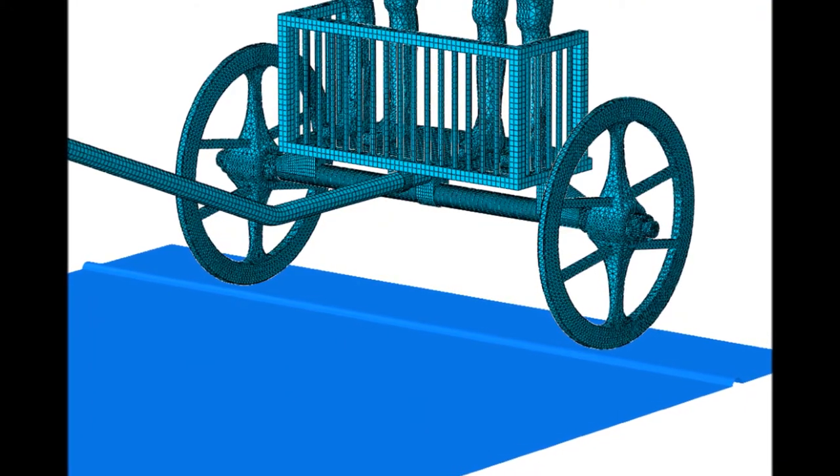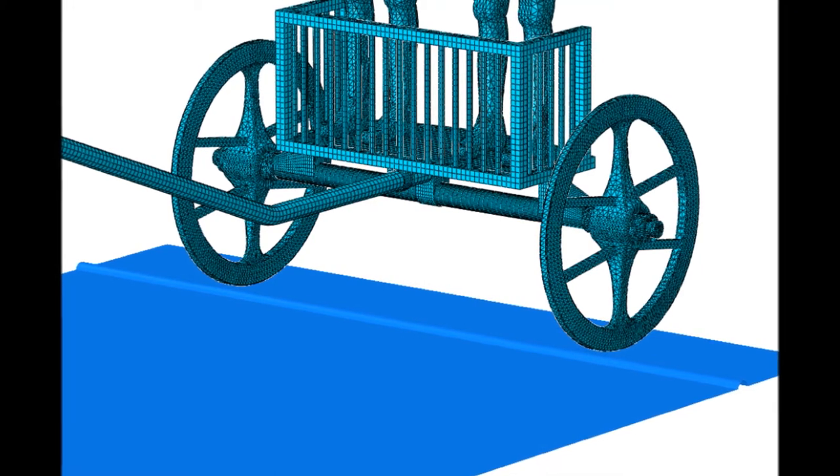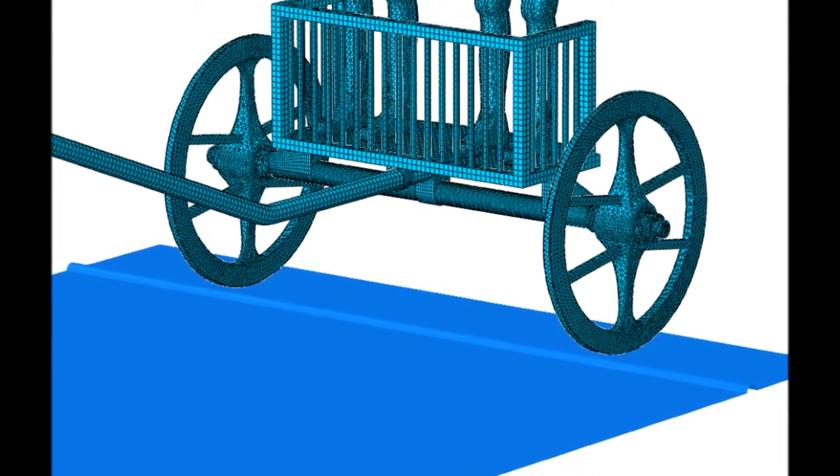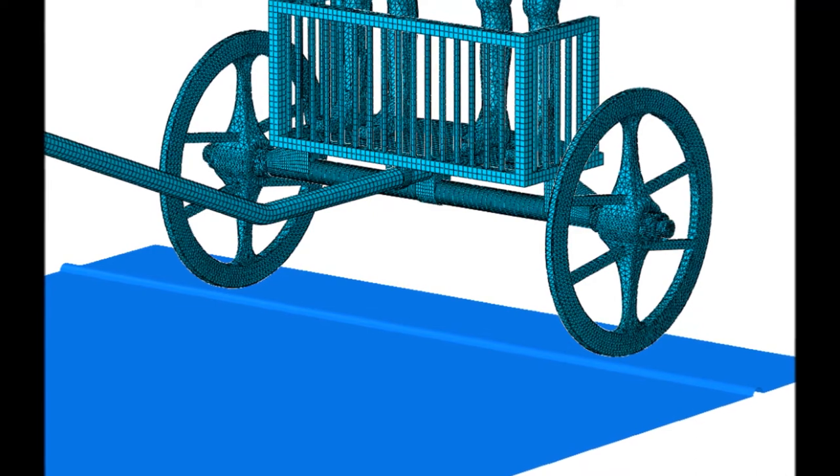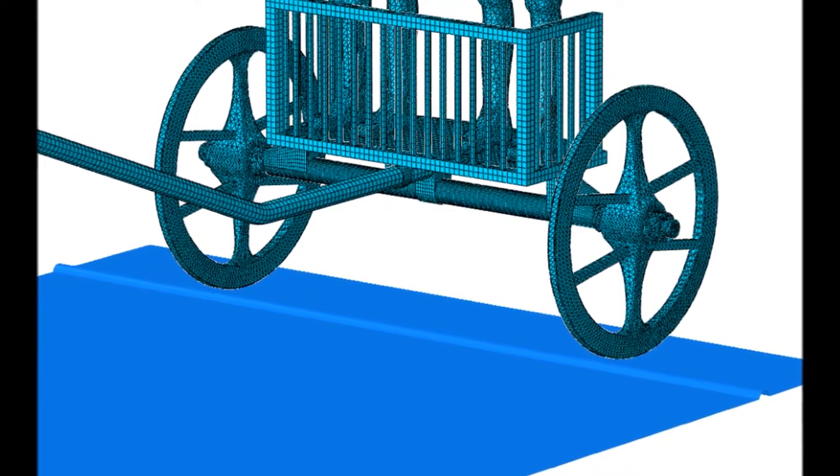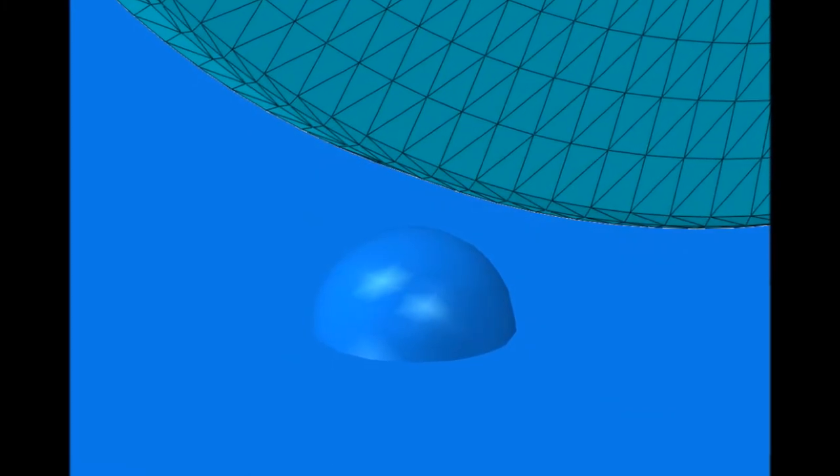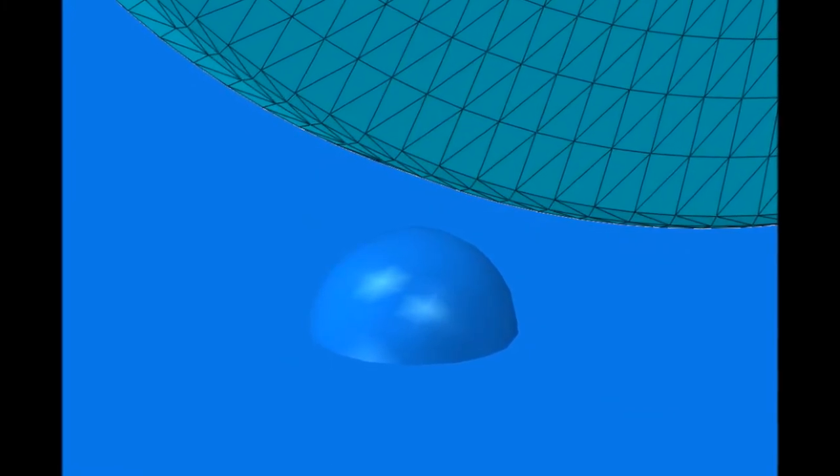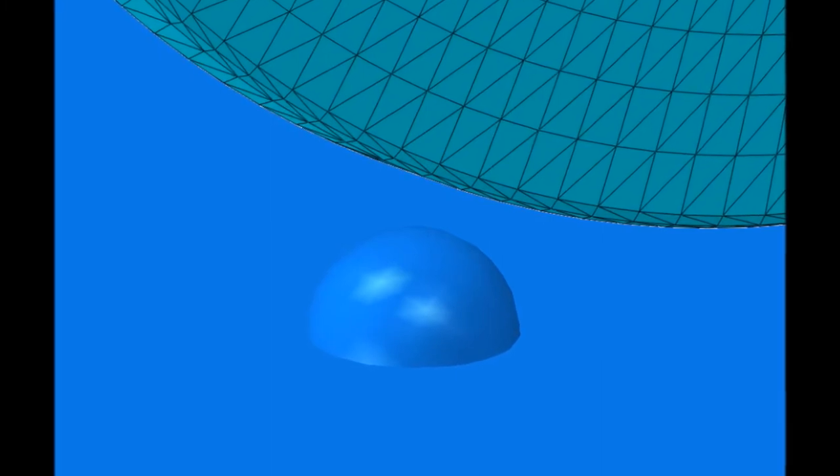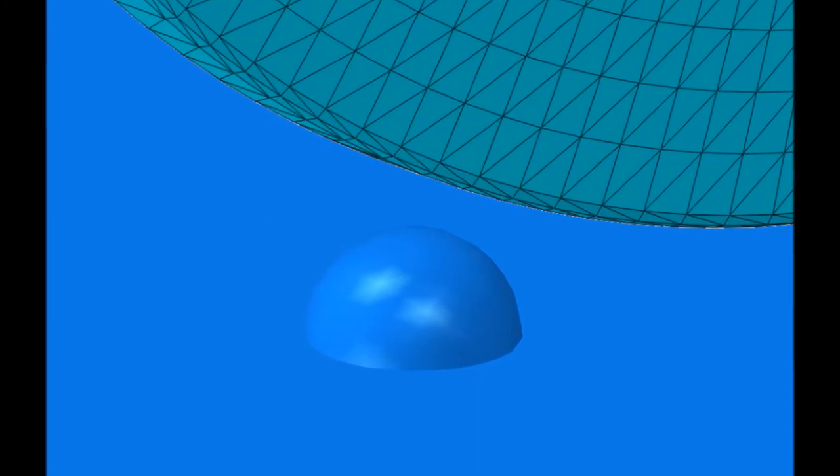Simulations of symmetric bump included a transverse asperity of 3 cm height on the floor, bumped by the chariot with both wheels. Simulations of asymmetric bump included a spherical asperity of 3 cm height on the floor, bumped by the chariot with the left wheel only.